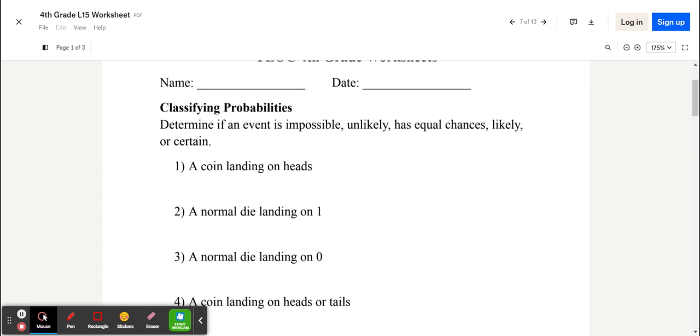For our first section, we have classifying probabilities, and we'll be determining if an event is impossible, unlikely, has equal chances, likely, or is certain.